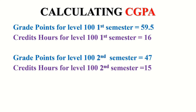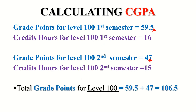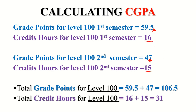To find the CGPA for this person in Level 100, we sum the grade points for first semester and second semester as stated in the formula. Total grade points for Level 100 = 59.5 + 47 = 106.5. Then to find the total credit hours, we sum the credit hours for first and second semester: 16 + 15 = 31.